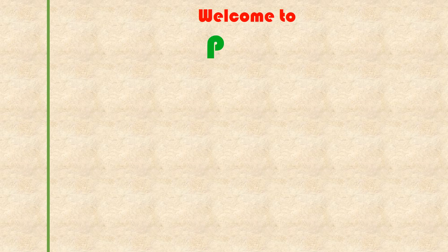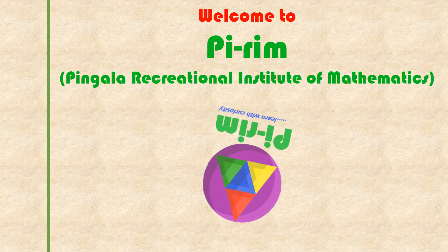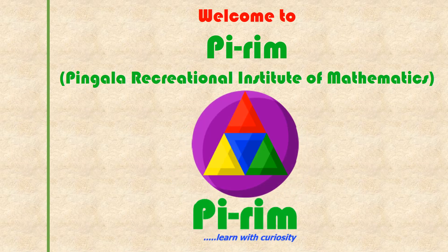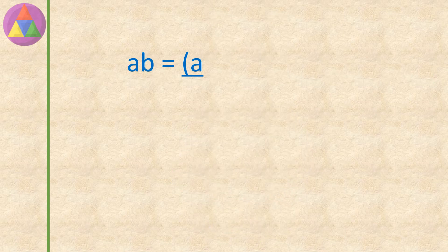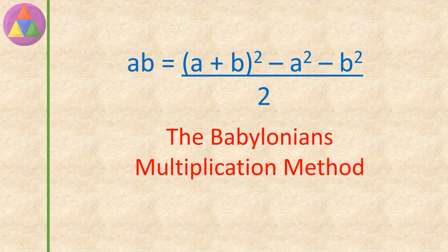Welcome to PYRAM — Pingala Recreational Institute of Mathematics. AB equals A plus B whole square, minus A square, minus B square, divided by 2. This is the Babylonian's Multiplication Method.